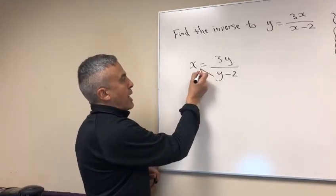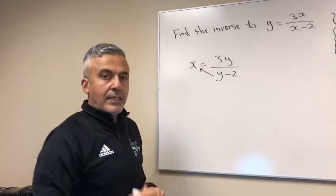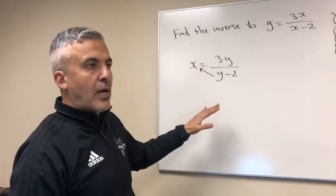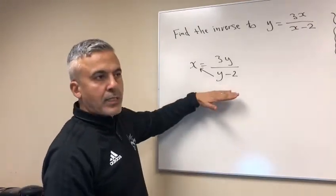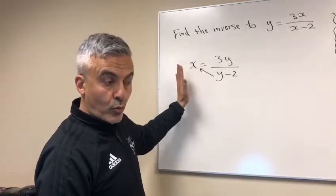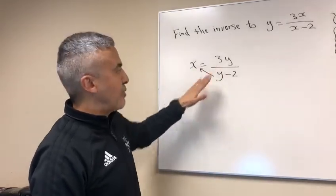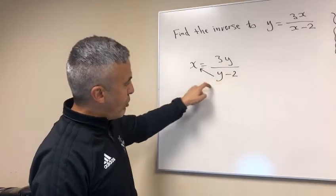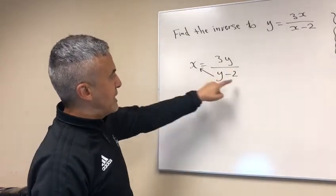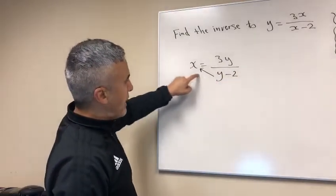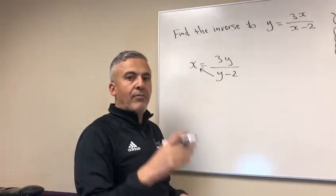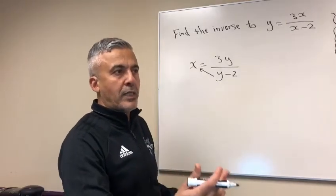Cross multiply the y minus 2 into the x. As I said in my earlier videos, when you're cross multiplying, you just cross multiply what you want to across the equal sign. You don't have to cross multiply everything. So what you want to have go with the x is the y minus 2, so just cross multiply that. And when you cross multiply, if something's on the bottom and it crosses the equal sign, it goes to the top.